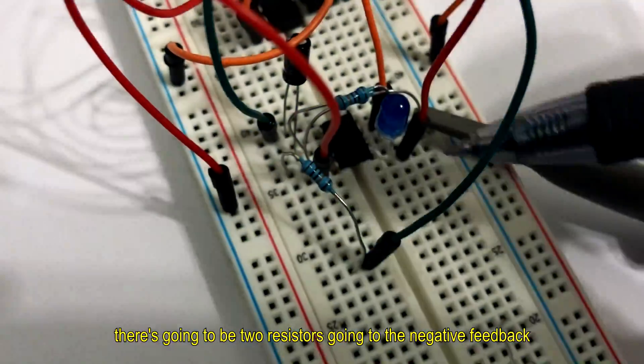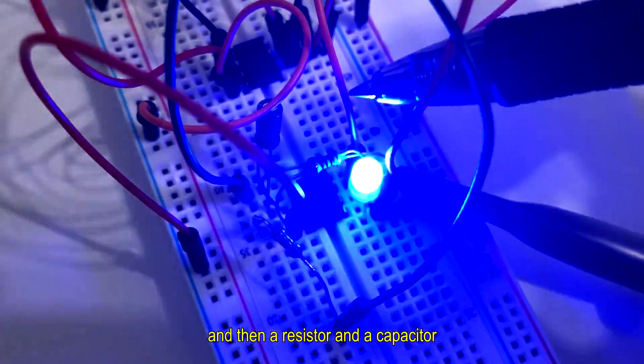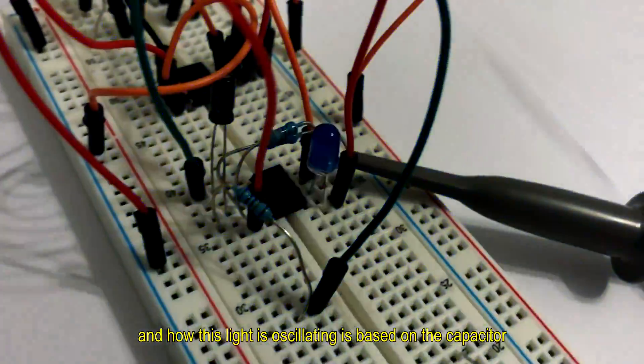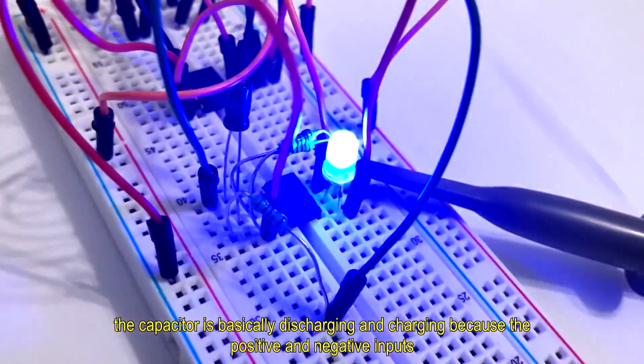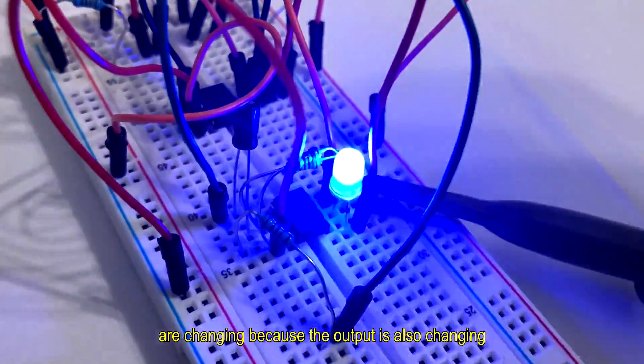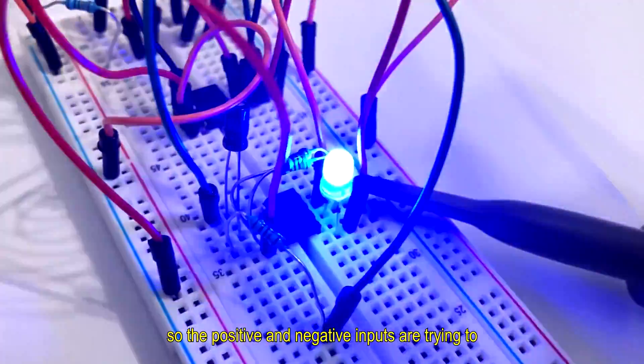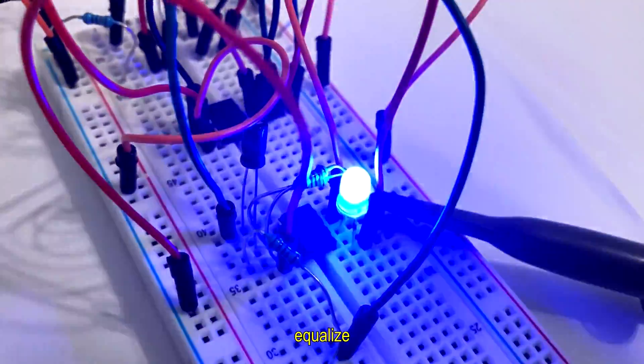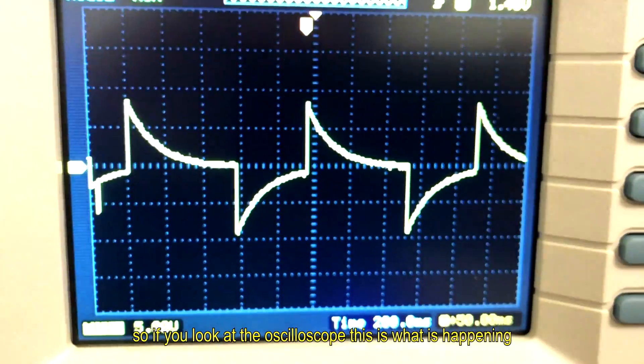You can see the negative and positive feedback. There's going to be two resistors going to the negative feedback and then a resistor and a capacitor going to your positive feedback. How this light is oscillating is based on the capacitor. The capacitor is discharging and charging because the positive and negative inputs are changing because the output is also changing.